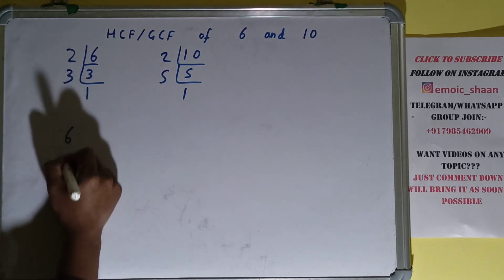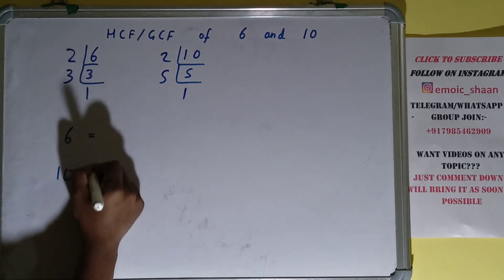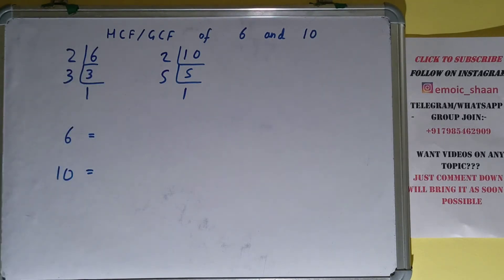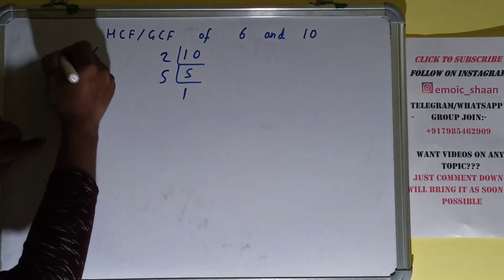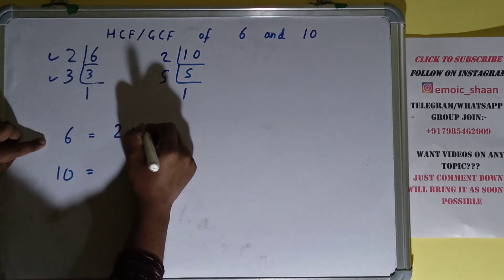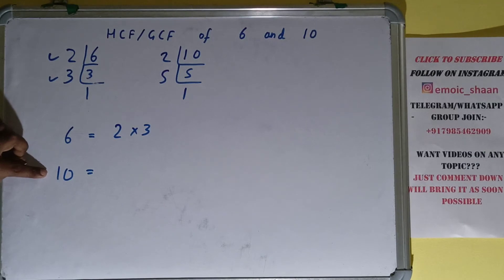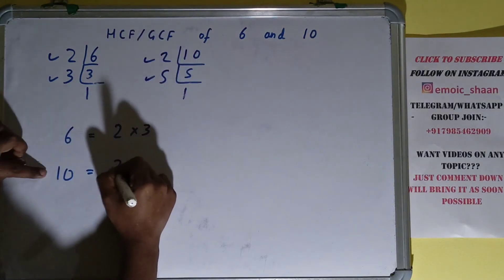The next step is we need to write each of the numbers with their respective factors. So for 6, the factors we got are 2 and 3. That is 2 × 3. For 10, the factors we got are 2 and 5. That is 2 × 5.